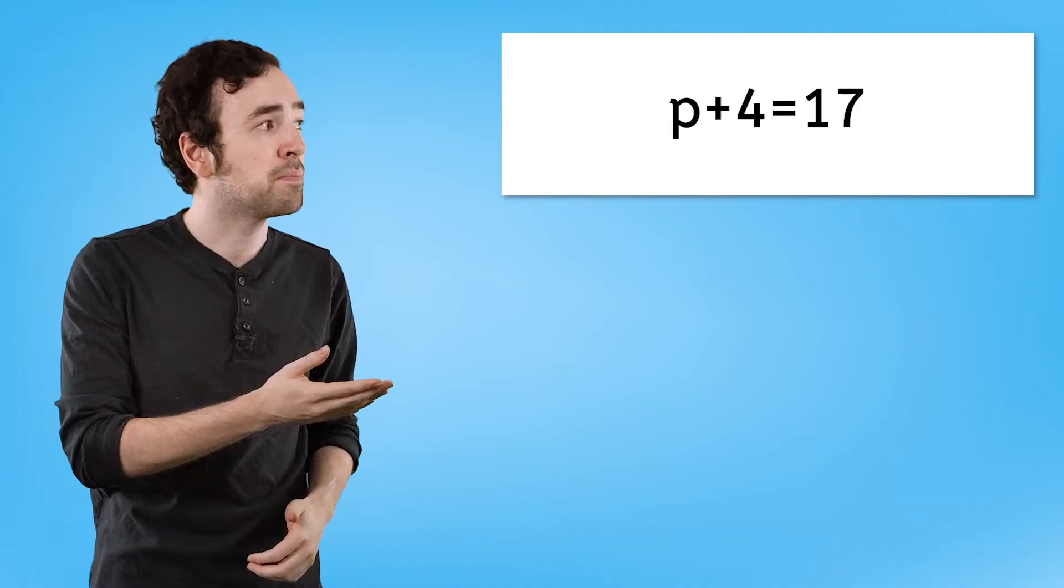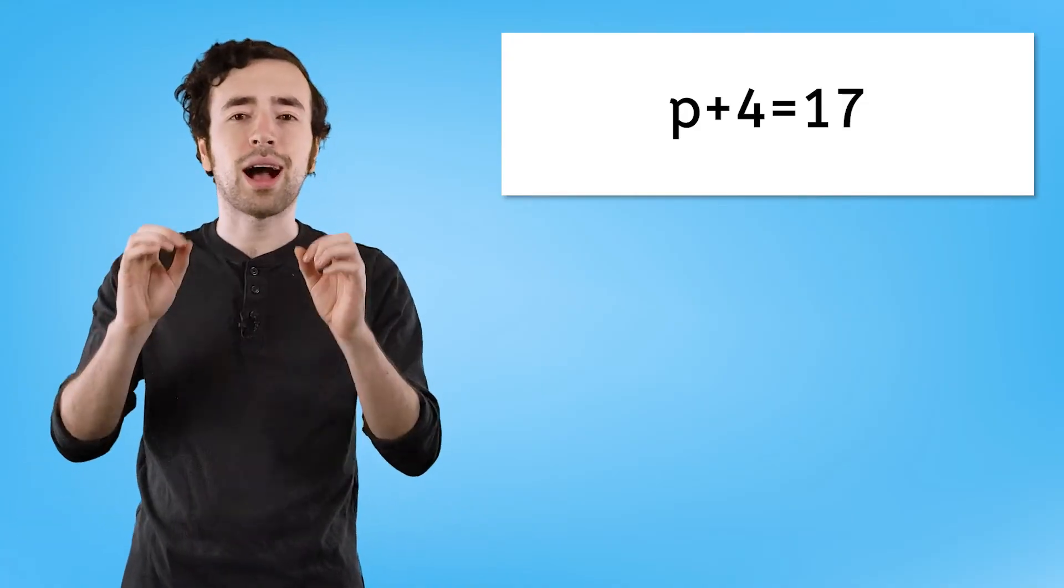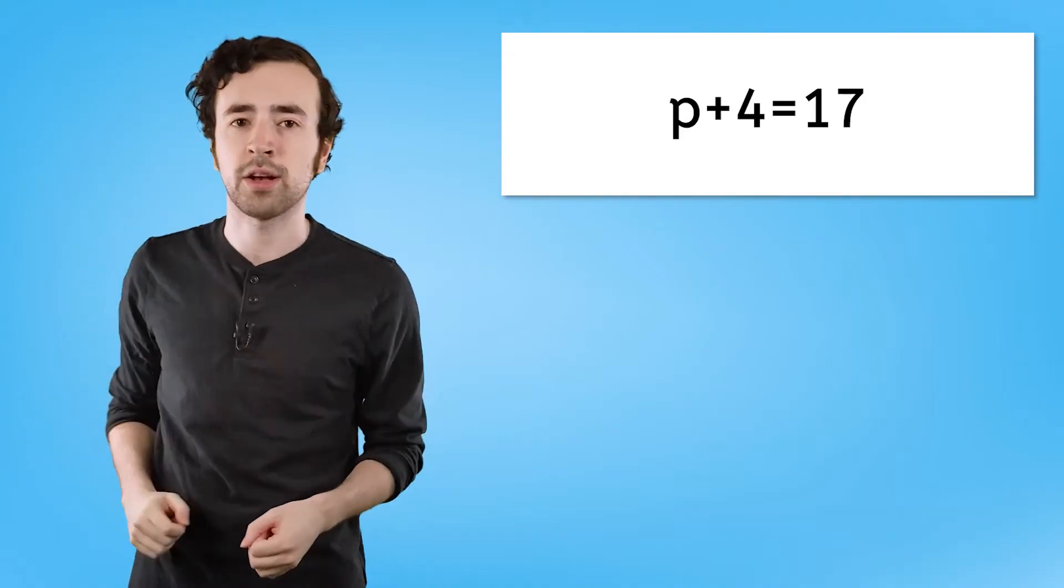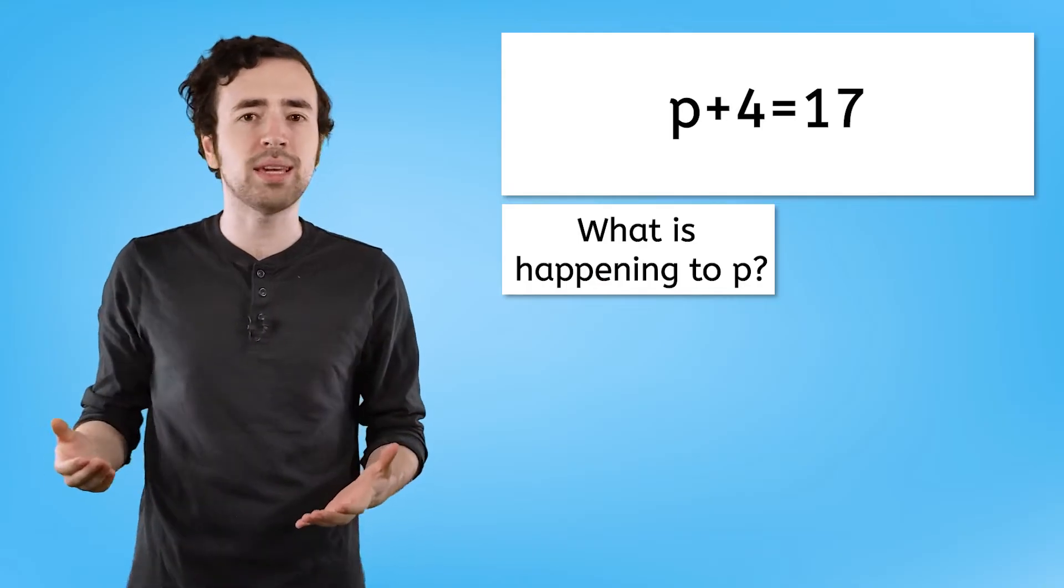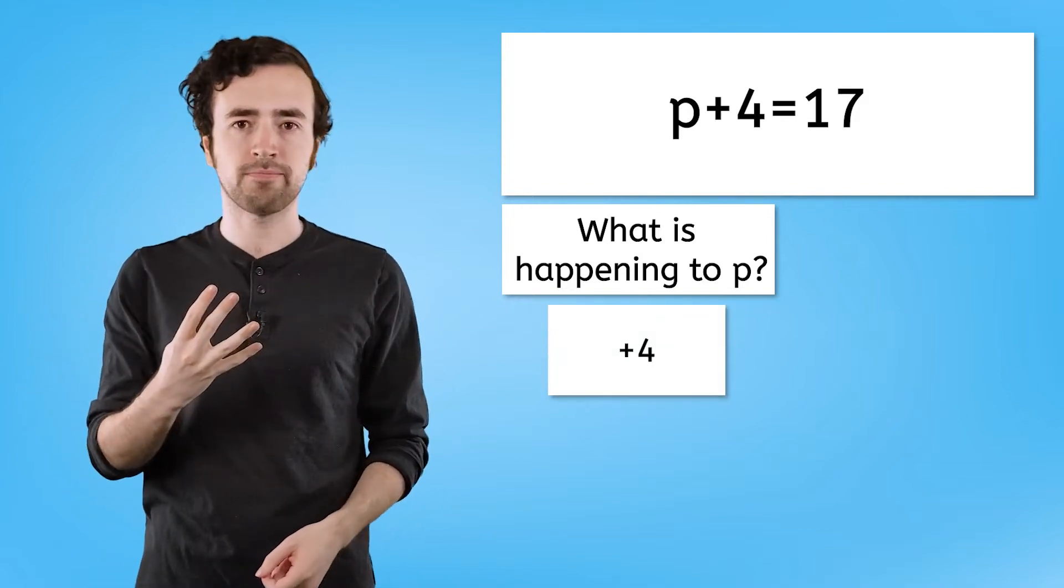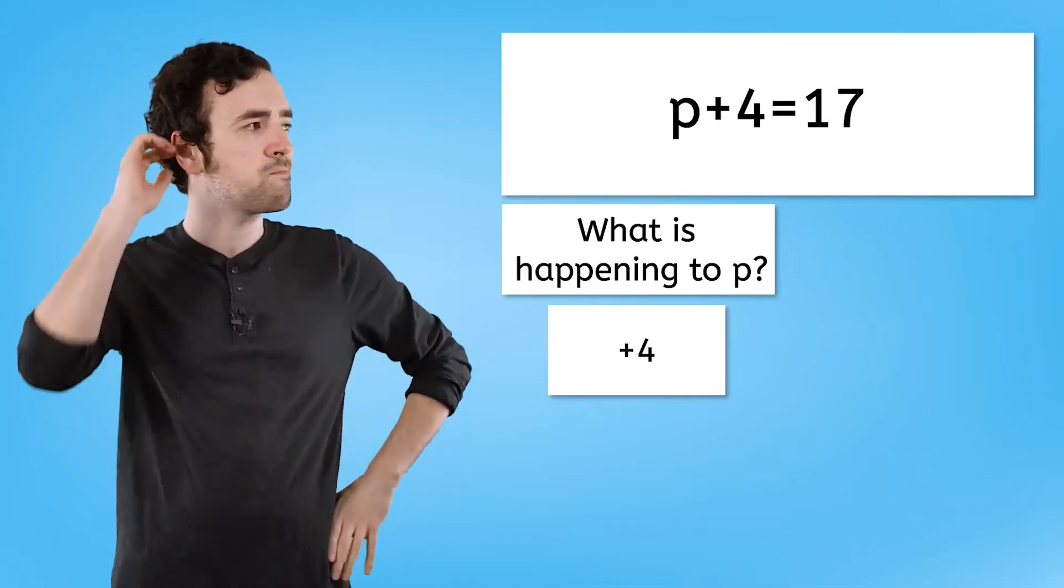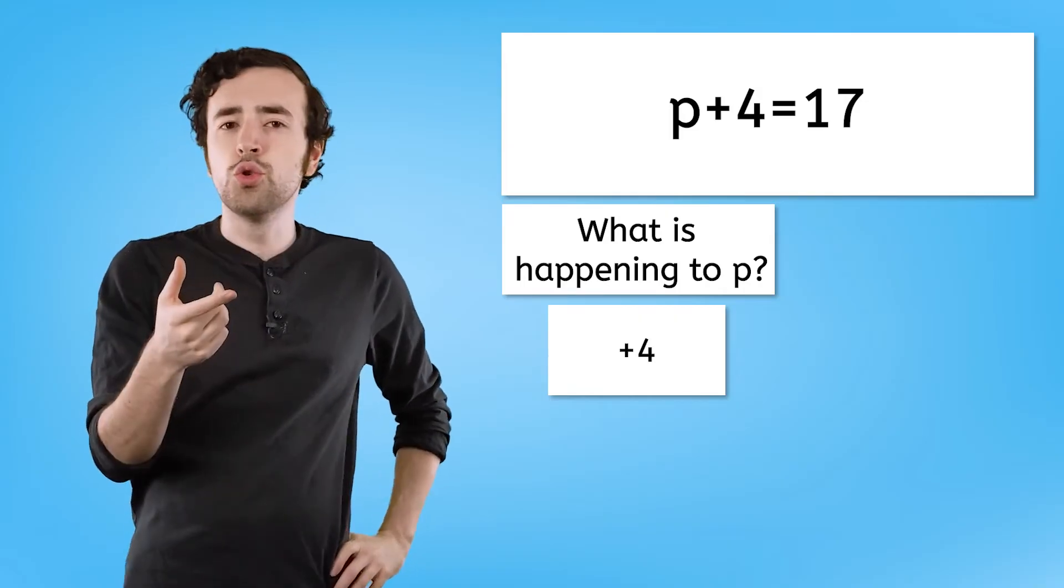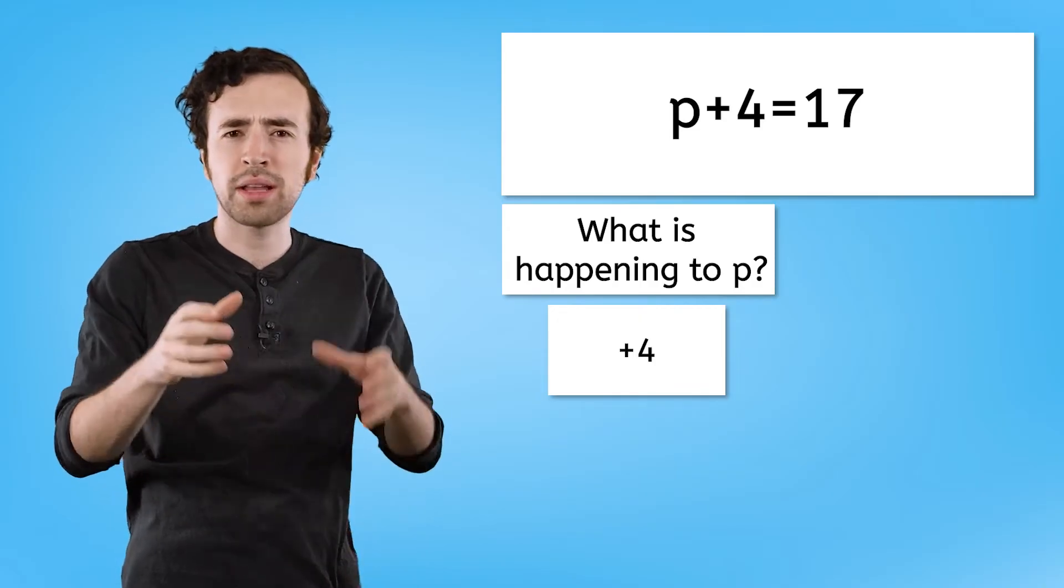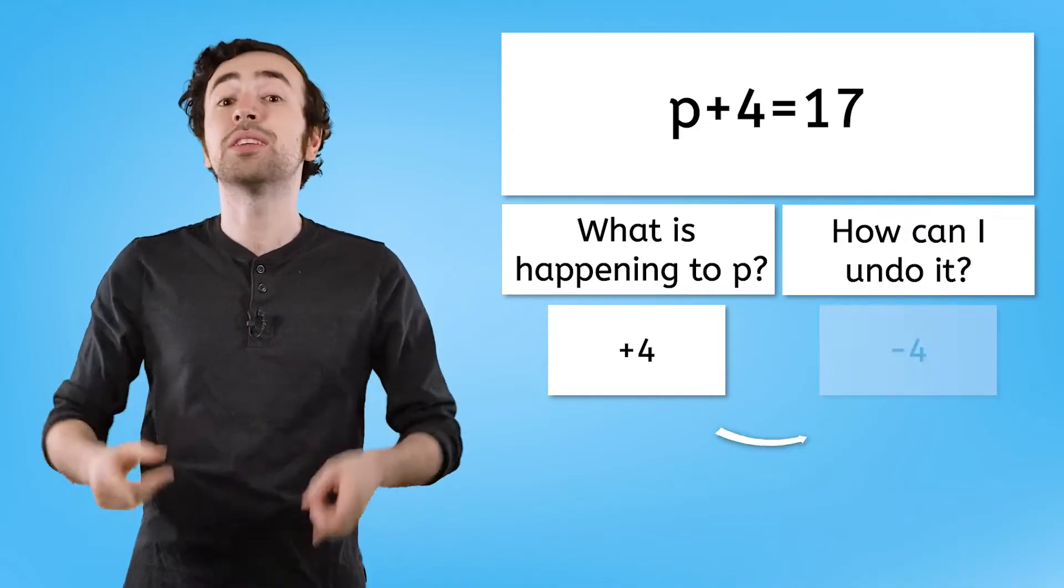Instead, let's look at an equation like p plus 4 equals 17. p is our variable and we don't know what number it represents yet. Just like a present, I want to peel away anything extra so that I can get that p all by itself. So what's happening to the p in this equation to make it 17? Yeah, I'm taking p and I'm adding 4 to it. So how do I get rid of that plus 4 to get p all by itself? While I want to undo adding 4 to the p, almost like I'm trying to rewind time for this equation, how can I undo adding 4? That would be subtracting 4. The reason that subtraction will undo addition is because they are inverse operations, meaning they're opposites.